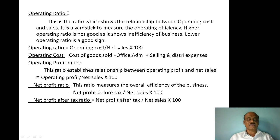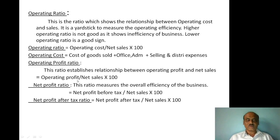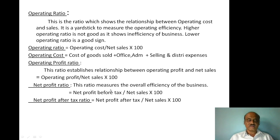Operating Profit Ratio is the ratio which establishes the relation between operating profit and net sales. The formula for Operating Profit Ratio is: Operating Profit divided by Net Sales, multiplied by 100. This ratio measures the overall efficiency of the business.